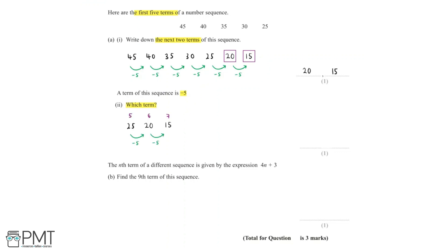Now we can take away 5 again to find the 8th term, which would be equal to 15 take away 5, which is equal to 10. We can take away 5 again to find the 9th term, which is equal to 5.